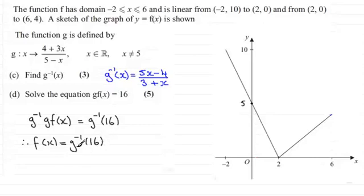And so we've got what the inverse of g(x) is, it's here. So if we just substitute 16 in for x here, what we get is (5 times 16 minus 4) / (3 plus 16). And work this out and you end up with 4.